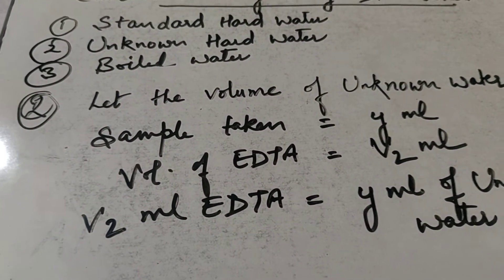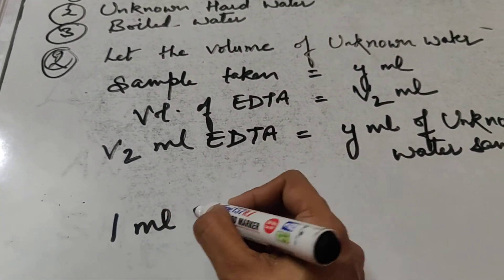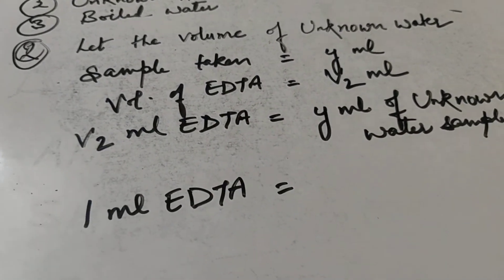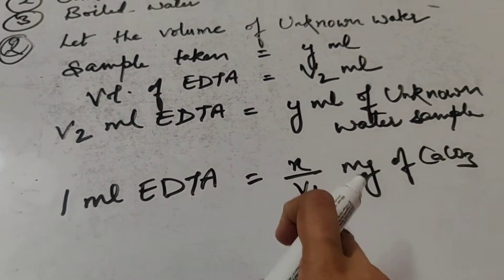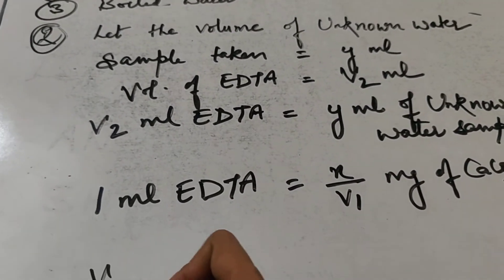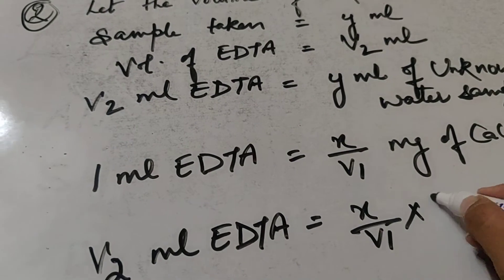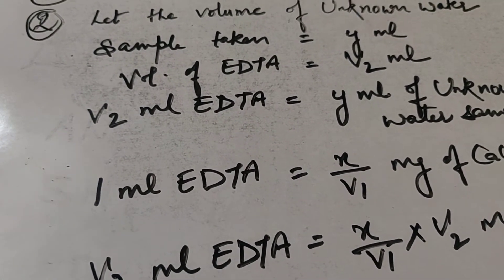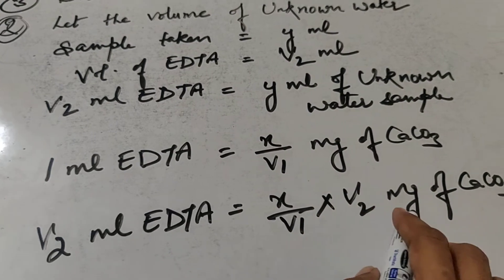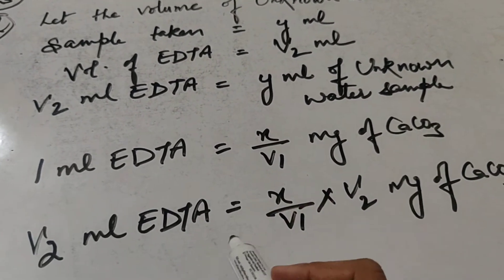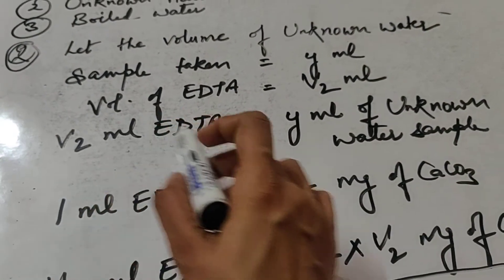From standardization, we found that 1 ml EDTA neutralizes X/V1 mg of CaCO₃. If 1 ml EDTA neutralizes X/V1 mg CaCO₃, then V2 ml EDTA will neutralize (X/V1) × V2 mg of CaCO₃. So V2 ml EDTA neutralizes (X × V2)/V1 mg of CaCO₃.